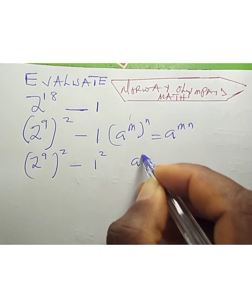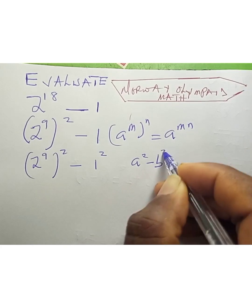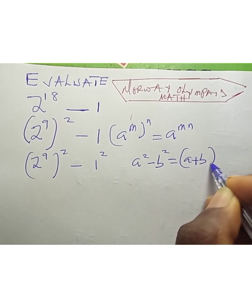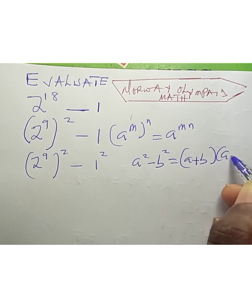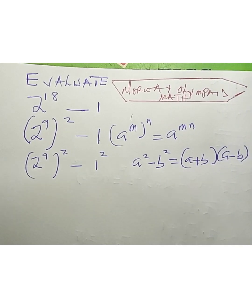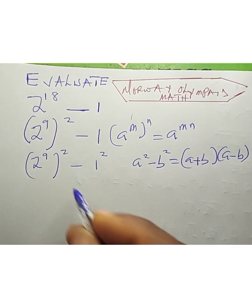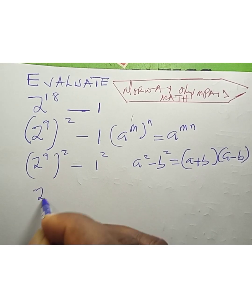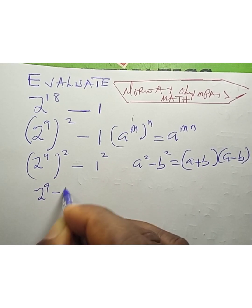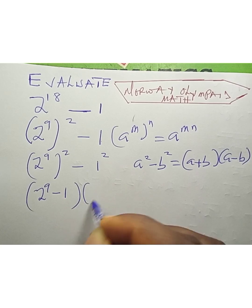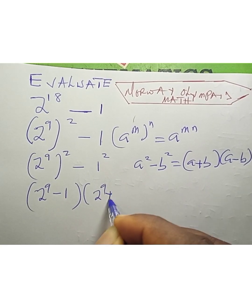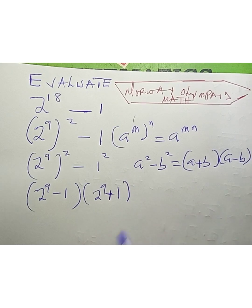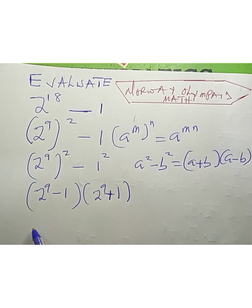a squared minus b squared equals (a plus b)(a minus b). So we can evaluate this as (2 raised to power 9 minus 1) times (2 raised to power 9 plus 1).